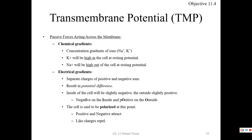To really understand transmembrane potential, there are two different things going on: a chemical gradient and an electrical gradient. Basically, it comes down to this — we are wrangling ions, taking them from one side of a membrane to another. These ions carry a charge, and because they carry a charge, they take their charge with them.